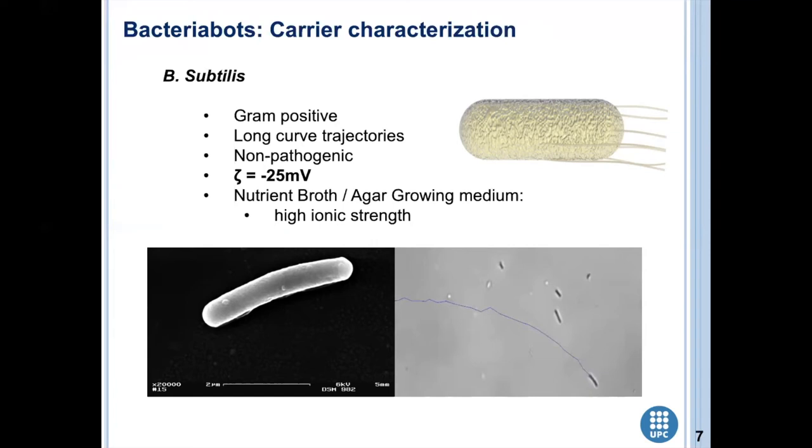The zeta potential is minus 25 millivolts, which gives the idea that interaction with positive surfaces is quite good. And it's grown in nutrient growth agar, but this contains or implies high ionic strength.